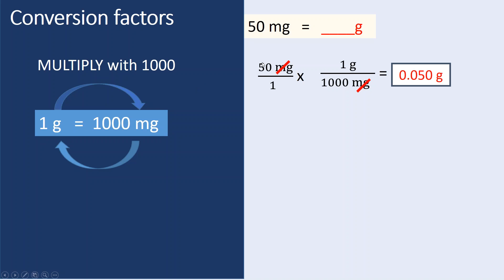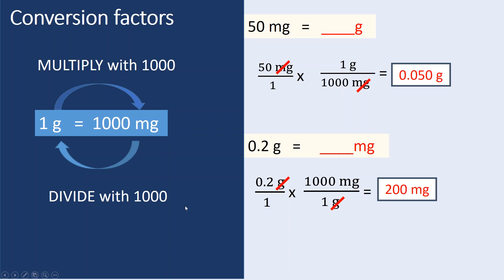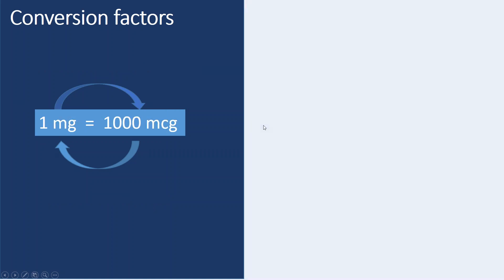Alternatively, you can convert by multiplying grams by 1000 to get milligrams. Going the other direction — grams to milligrams — 0.2 grams set up in dimensional analysis, with 1 gram equal to 1000 milligrams. Grams cancel out, giving you 200 milligrams. Alternatively, dividing milligrams by 1000 gives you grams.